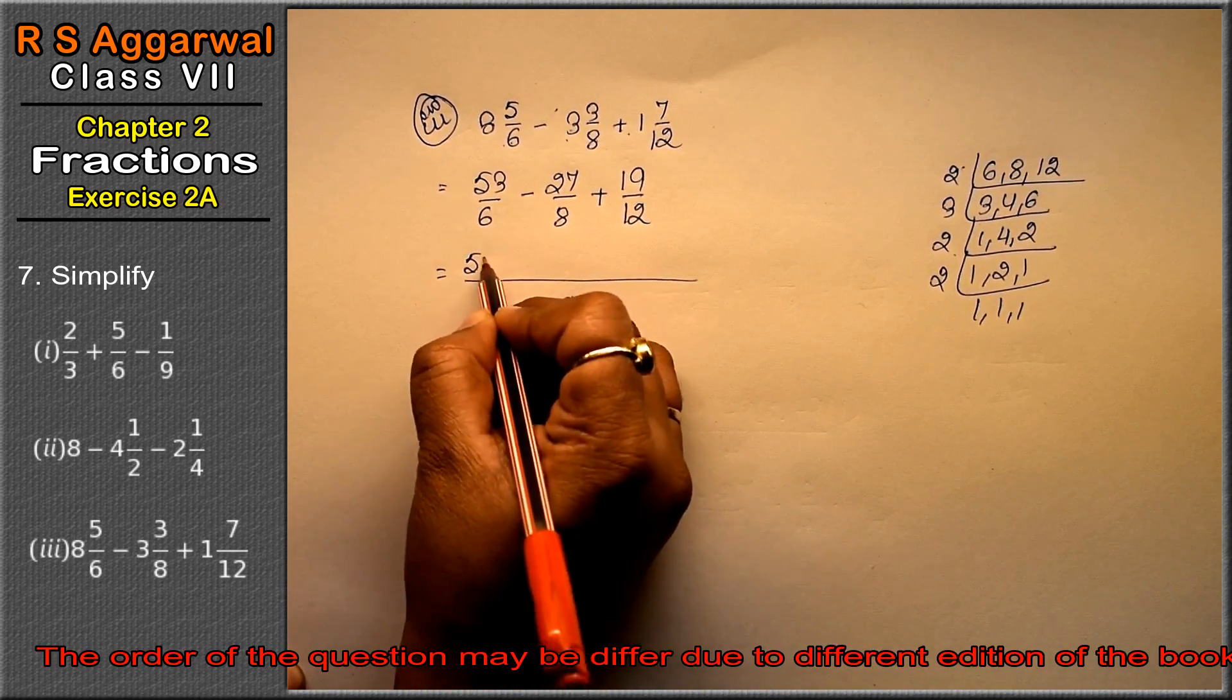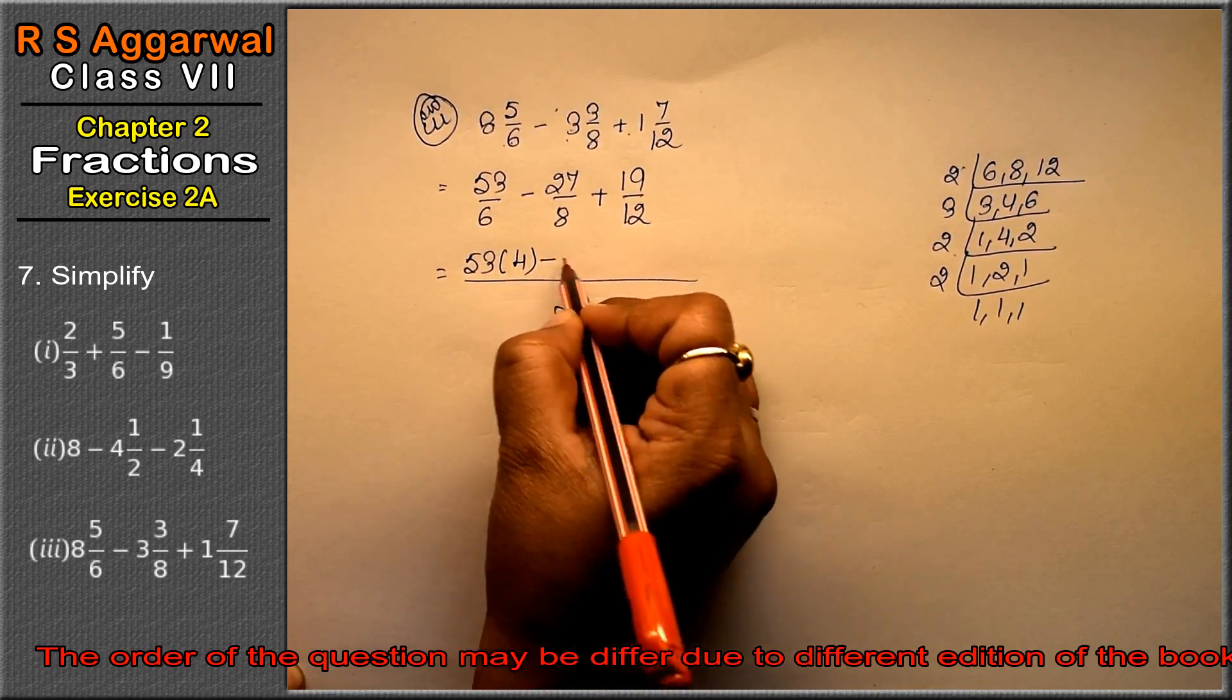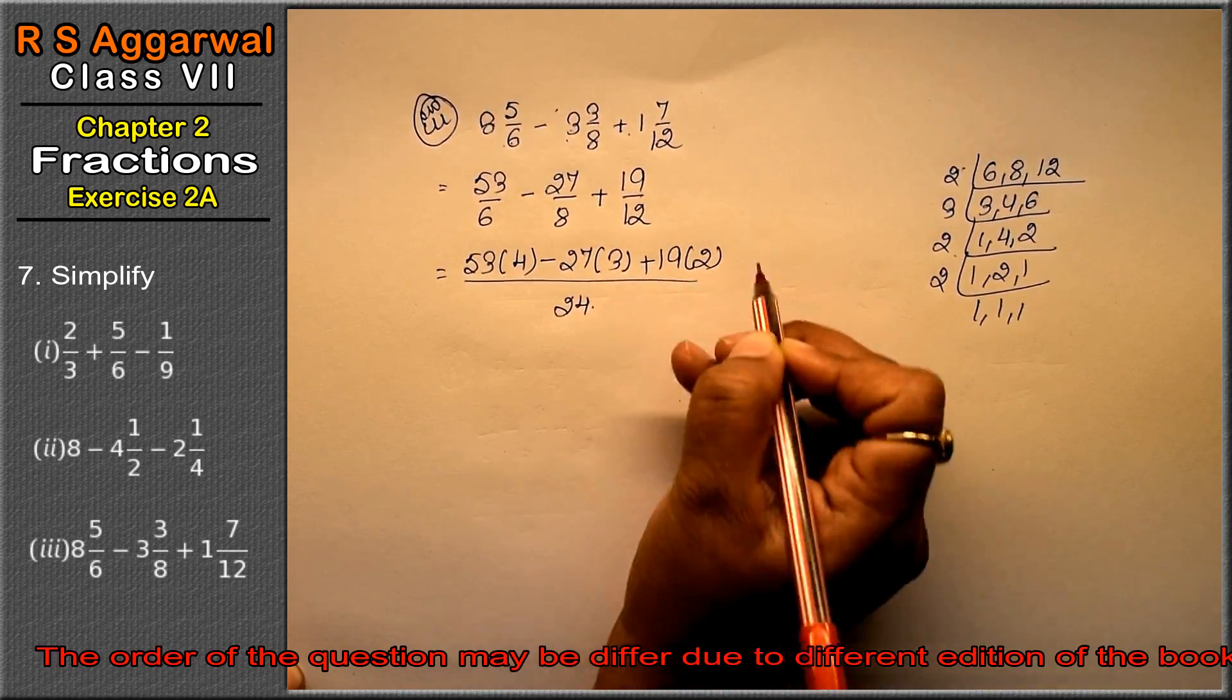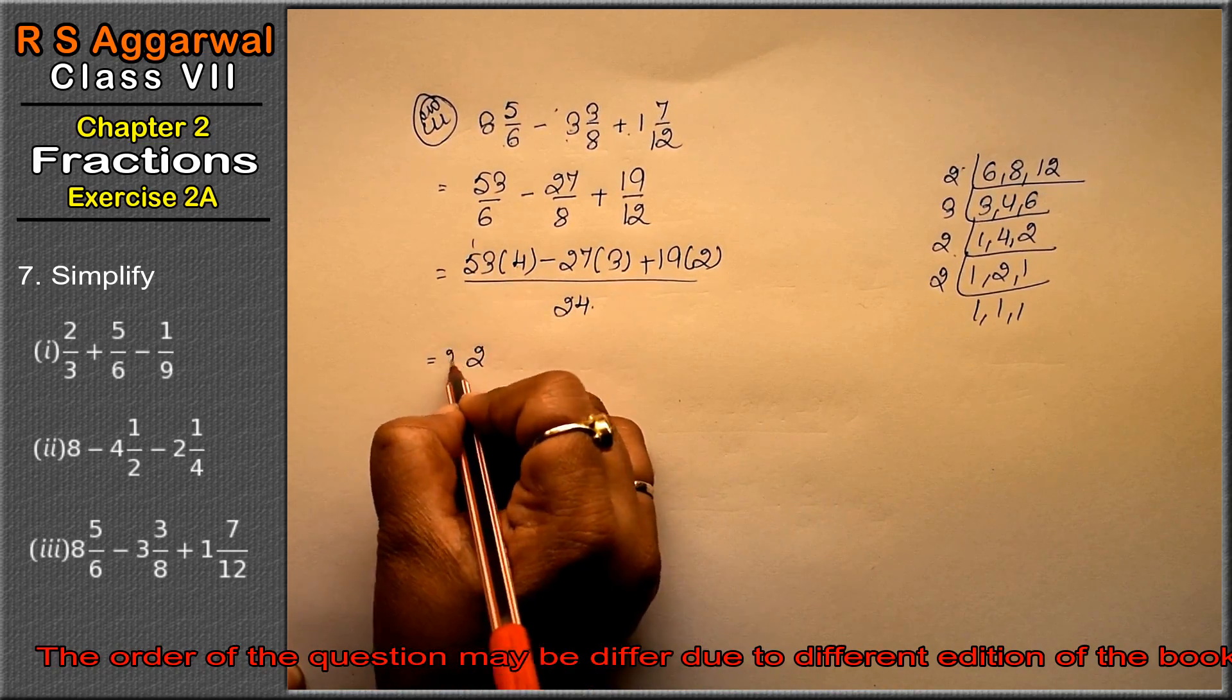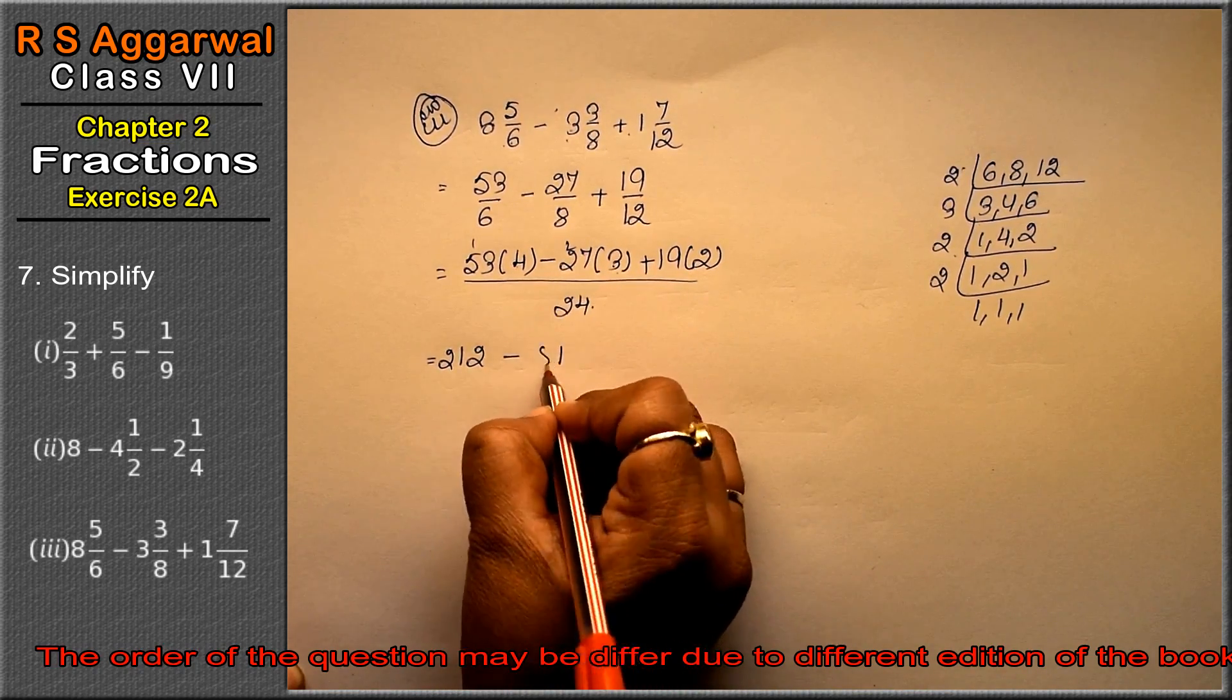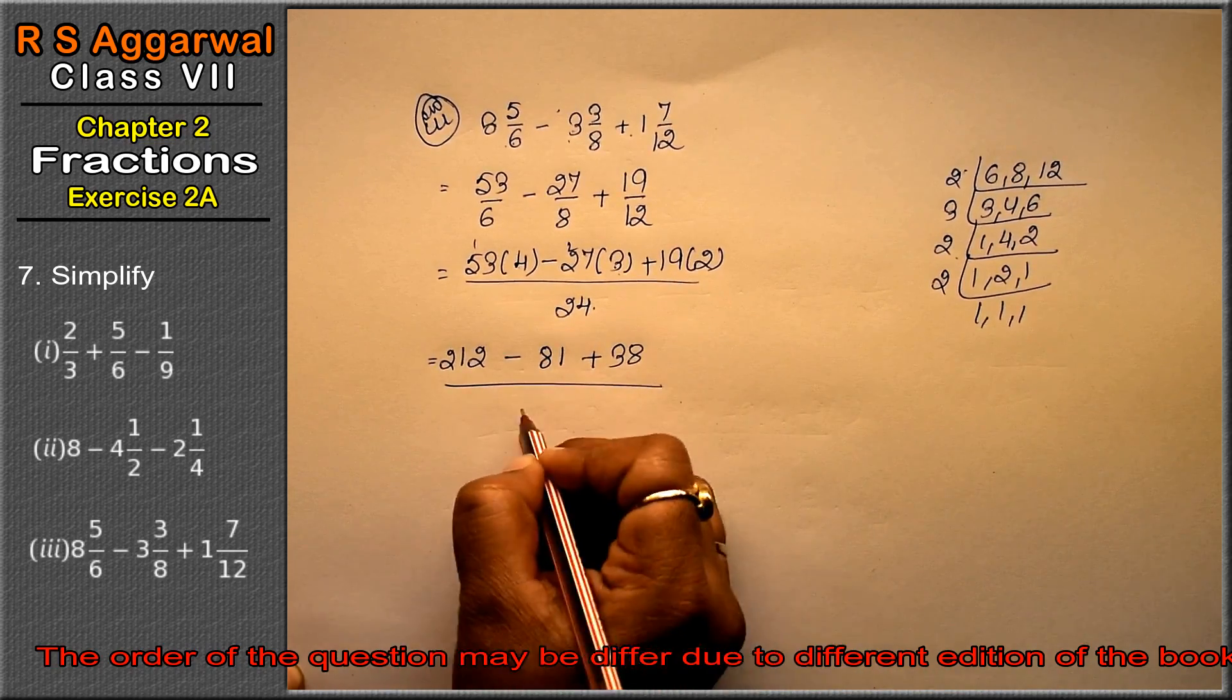Now 53, 6, 4 is 24 minus 27 into 8, 3 is 24 plus 19 into 12, 2 is 24. So kitna a gaya, 4, 53 is 212 minus 3, 27 is 81 plus 2, 19 is 38 upon 24.